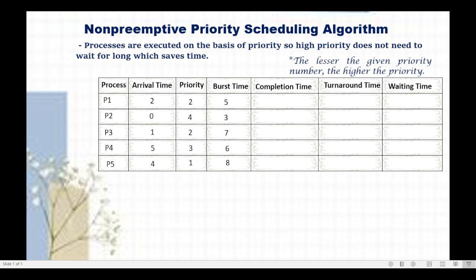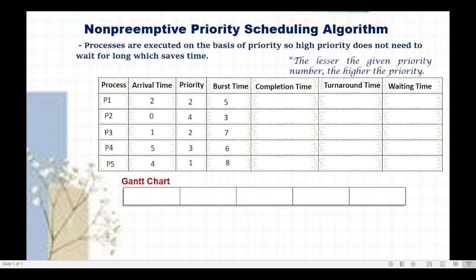I will now be creating a Gantt chart to show when a particular process gets the CPU time for its execution and when it finishes. This Gantt chart will also help us in determining the completion time of each process, and consequently we will be able to compute the turnaround time and waiting time. We are going to start from time 0 in the Gantt chart. At time 0, we check for the process which arrived in the ready queue.